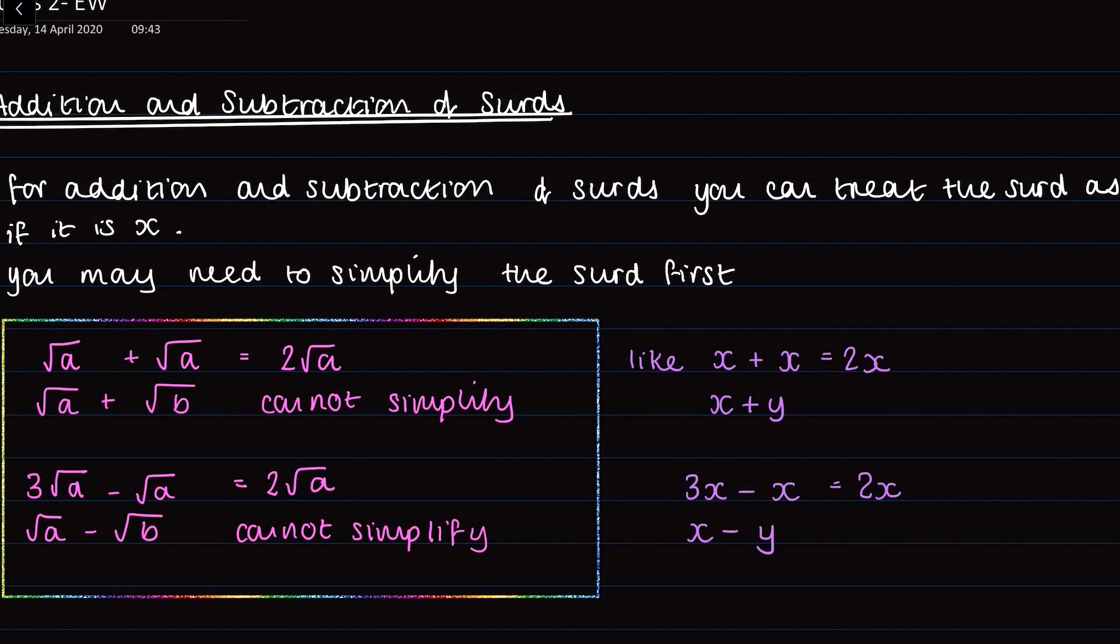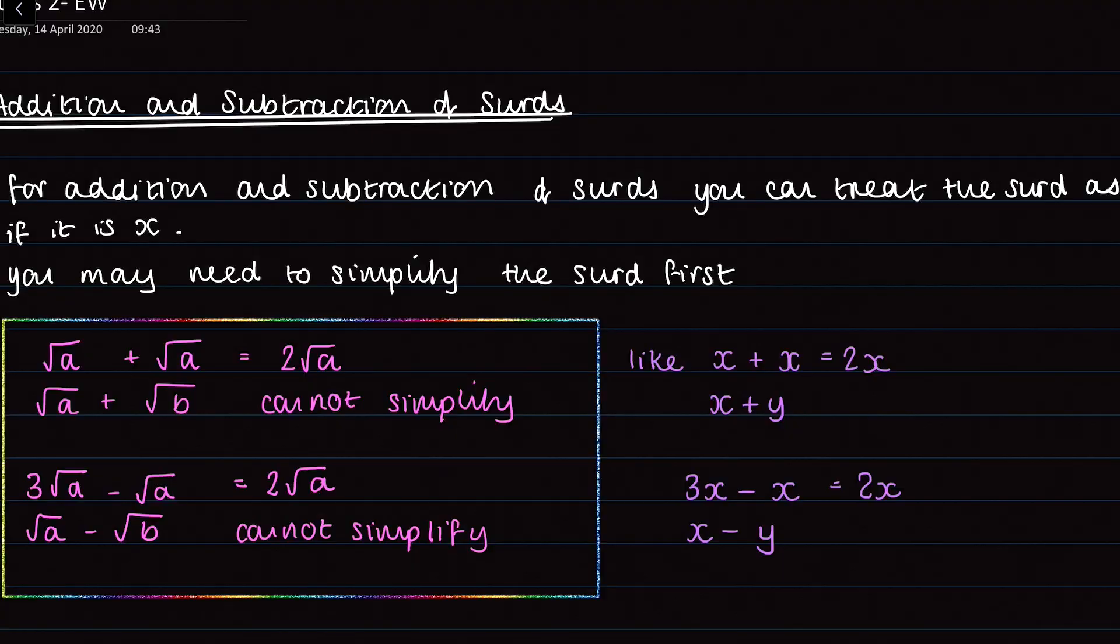The same rules apply for subtraction. So if you have surds that are the same square root, then we can do subtraction, and if not we cannot simplify. So if you look at these examples, if I have 3 root a minus root a, then we get 2 root a. Whereas if we have root a minus root b, then we can't simplify it. So you need to learn those rules, and I put them in the rainbow box to hopefully help you remember that you need to remember those.